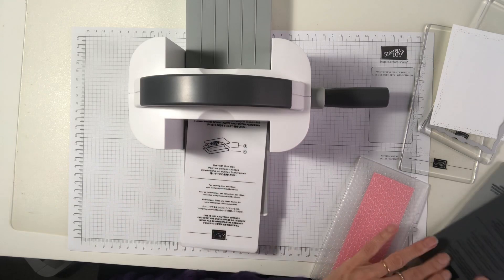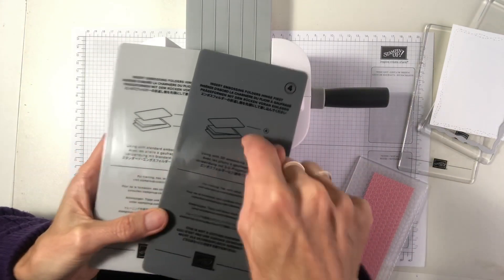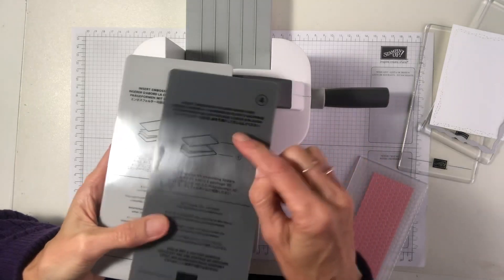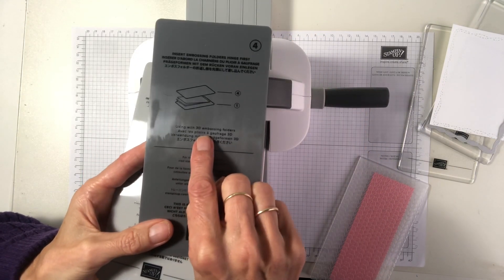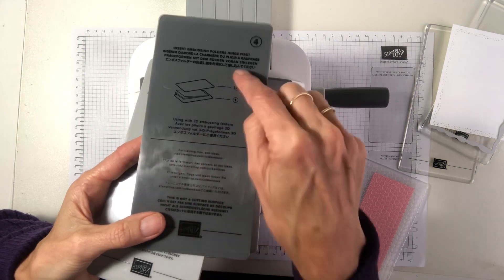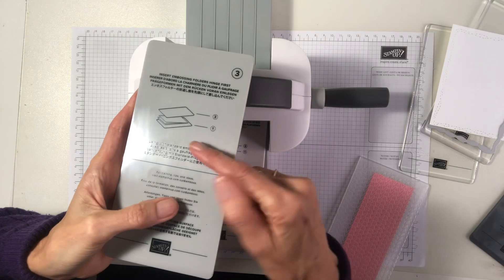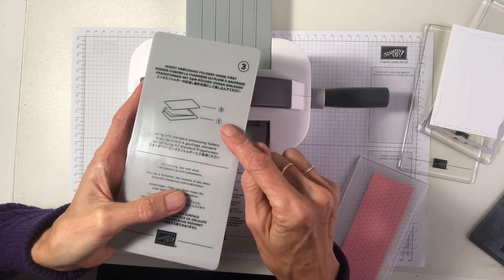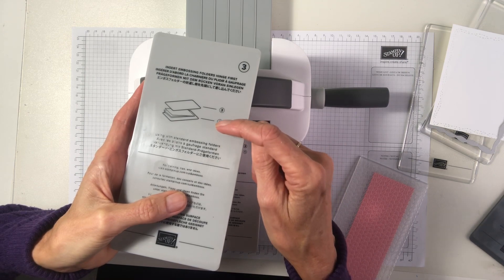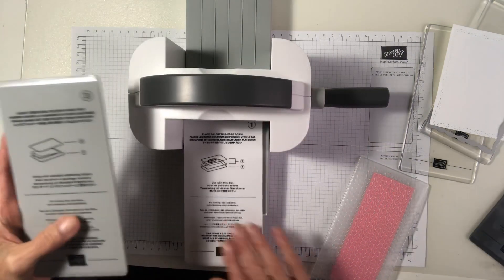When you want to emboss just have a look at this. There's actually two plates to emboss with. You have the darker grey one. You'll notice is using the 3D embossing folders. So that will show you which way to use that. The lighter grey is for our standard embossing folders. Generally the thinner ones. And so for that we'll need our plate one and just one of our three. So we have these.